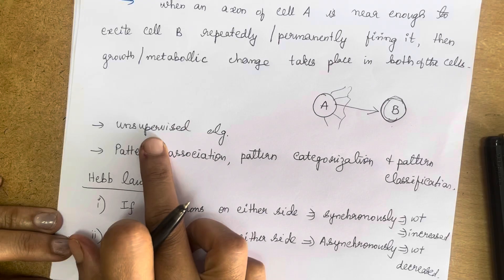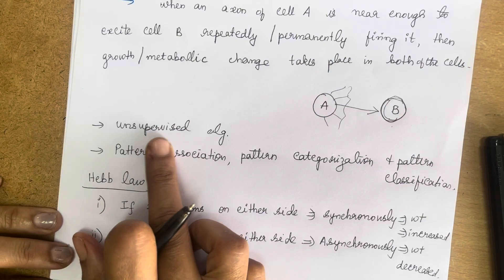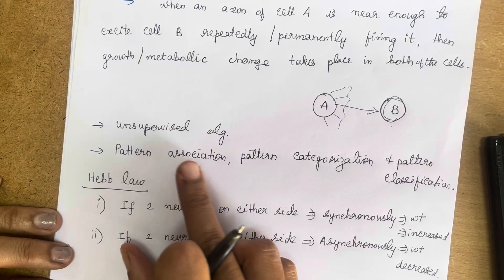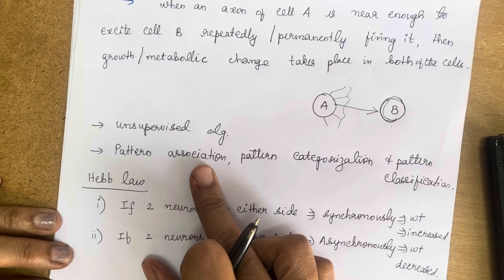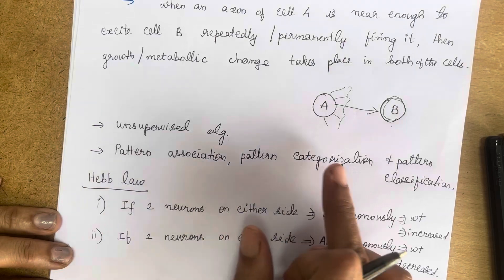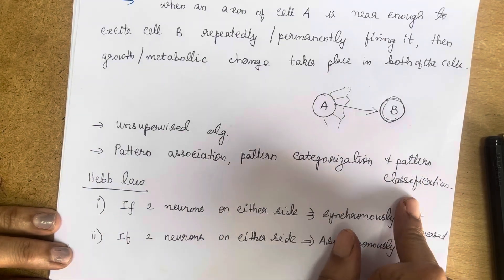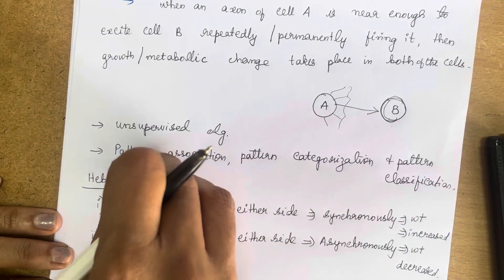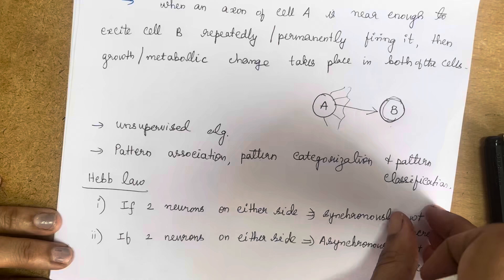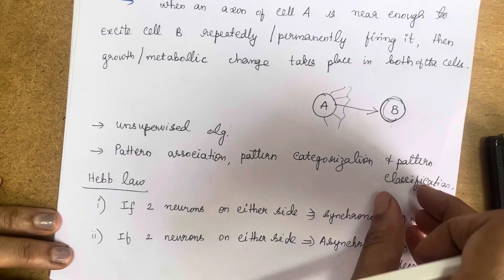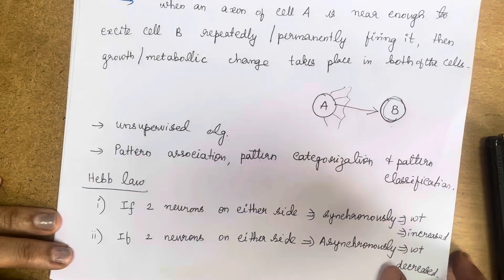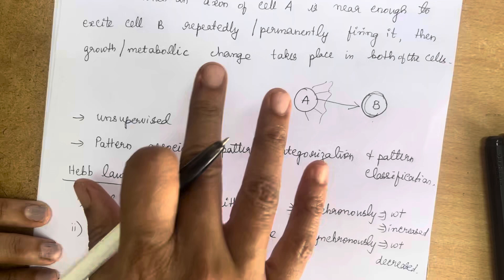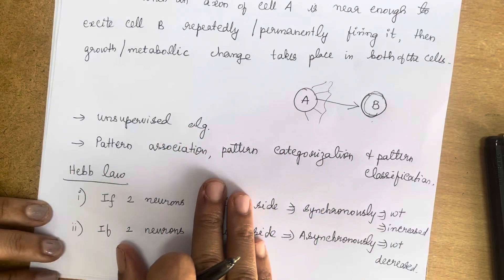The Hebb network forms a basis for unsupervised learning and is used in pattern association, pattern categorization, and pattern classification. So if you want to do any classification or association, you can use this Hebb network.